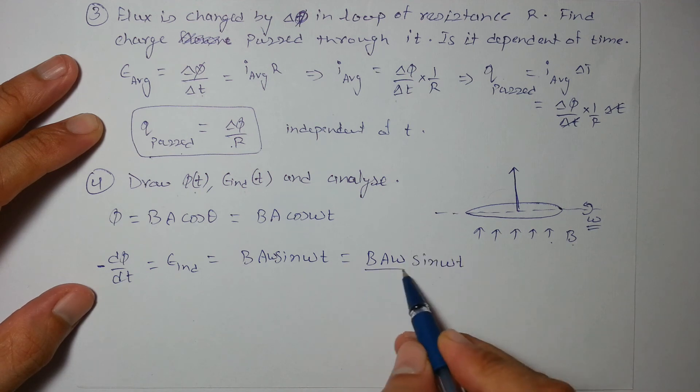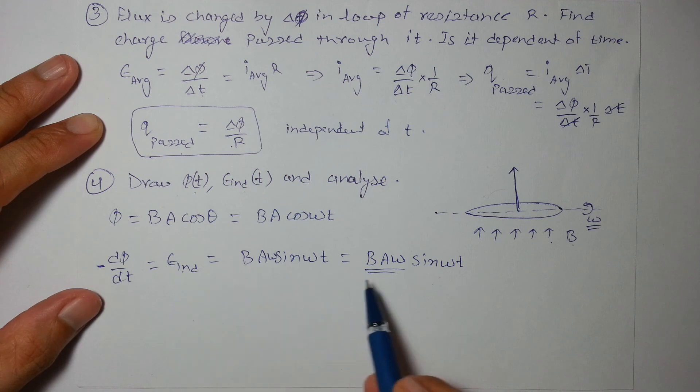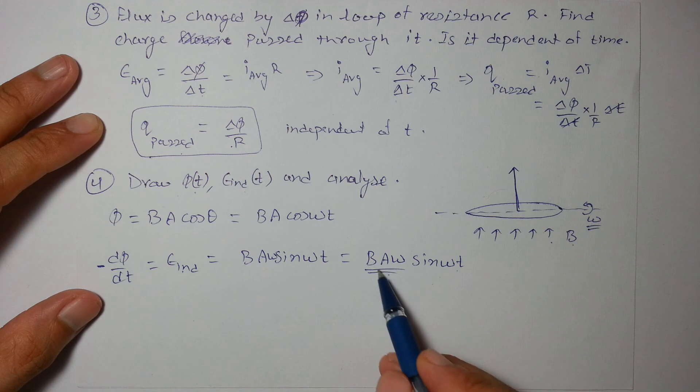This is the function I have already solved, BA omega sin omega t. This is the magnitude of the EMF and this is the varying function. So this is the maximum value of EMF and this is the frequency with which it will oscillate.